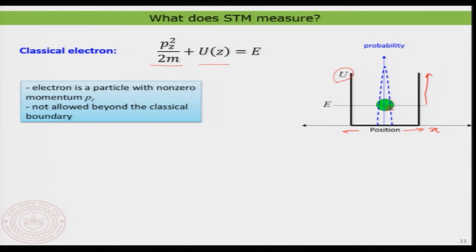That is very straightforward, and it means you would always find the electron is basically there — the electron is nowhere else. This is what a classical electron means: because it is actually behaving as a particle, that is the classical description.